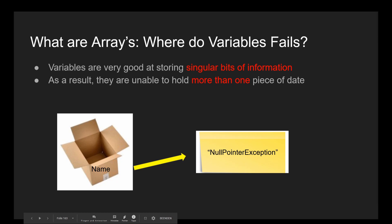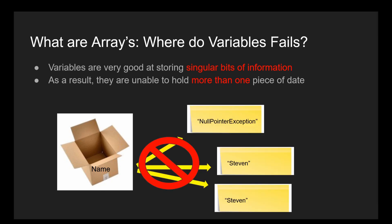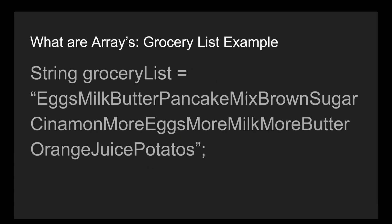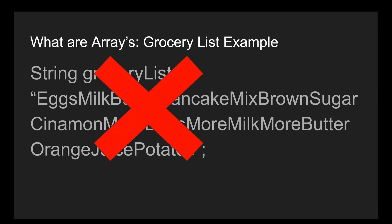We already talked about variables and how great they are for storing singular bits of information for making our code more simplistic. But one of the biggest drawbacks that come with variables is their inability to hold more than one piece of different information. For example, let's say you are making an app which allows users to create a grocery list. There's no easy way to create lists using variables because it's not like you can have one variable store the names of seven or eight different food items. Remember, we can only put one piece of paper in our cardboard box, no more. And besides, even if you were to add multiple items to one string variable, you still would have a lot of trouble doing simple tasks like searching through it, splitting it, or even deleting items from the list when you are done with them.